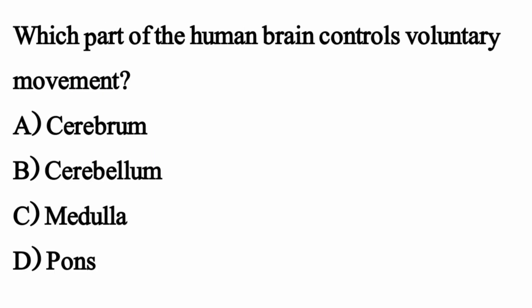Which part of the human brain controls voluntary movement? The right option is option A: cerebrum.